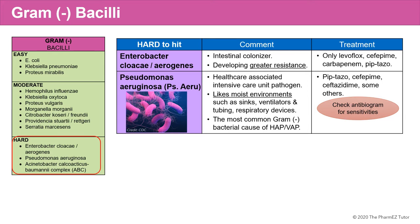The second important hard-to-hit gram-negative bacilli is Pseudomonas aeruginosa, also abbreviated PSAERU. Pseudomonas is a healthcare-associated ICU-type pathogen. It likes moist environments such as sinks, ventilators, tubing, and respiratory devices, very similar to Legionella. It's the most common gram-negative bacterial cause of hospital-acquired pneumonia and ventilator-acquired pneumonia — HAP and VAP.